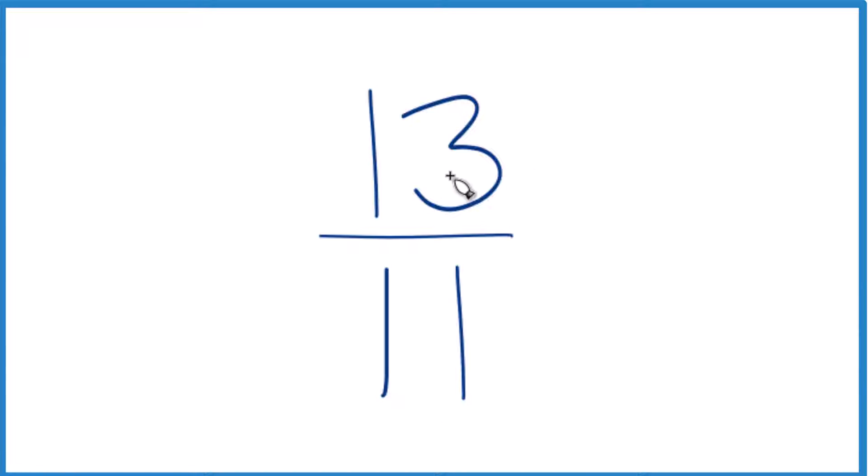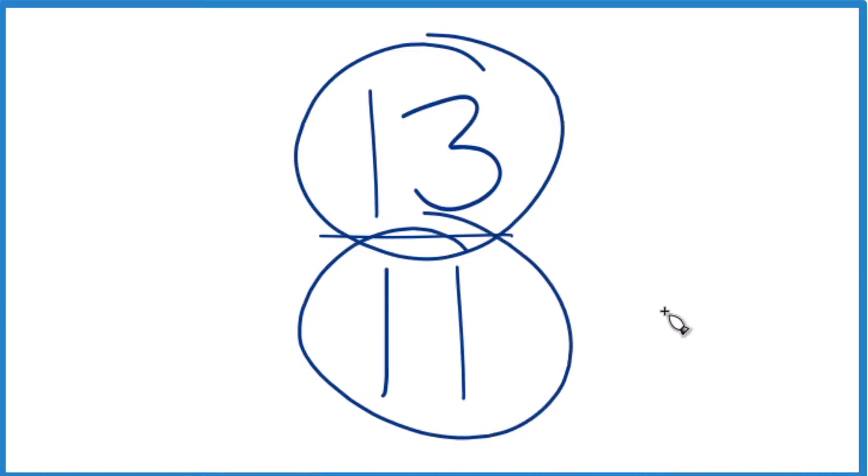First off, we can't simplify this fraction any further because the only number that goes into 13 and 11 is 1. So it's already simplified. But we can write it as a mixed number because it's an improper fraction. The numerator here is larger than the denominator.